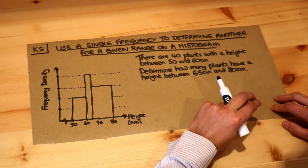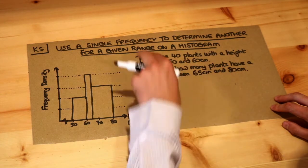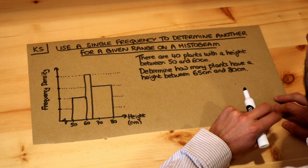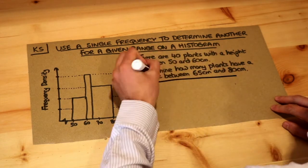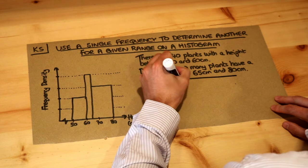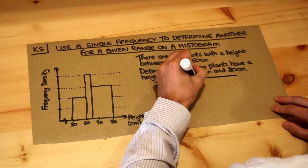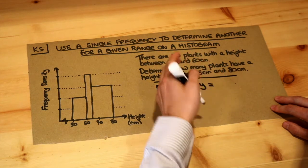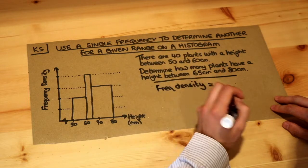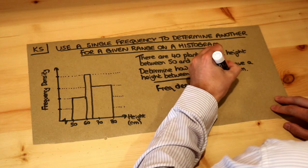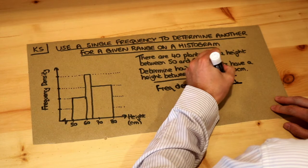Now I'm going to presume that you already have some knowledge of histograms because this is one of the final videos on histograms. But without going over everything, let's just remember this key formula: the frequency density—that's a measure of concentration, in this particular case the number of plants per centimeter length—is frequency divided by class width.